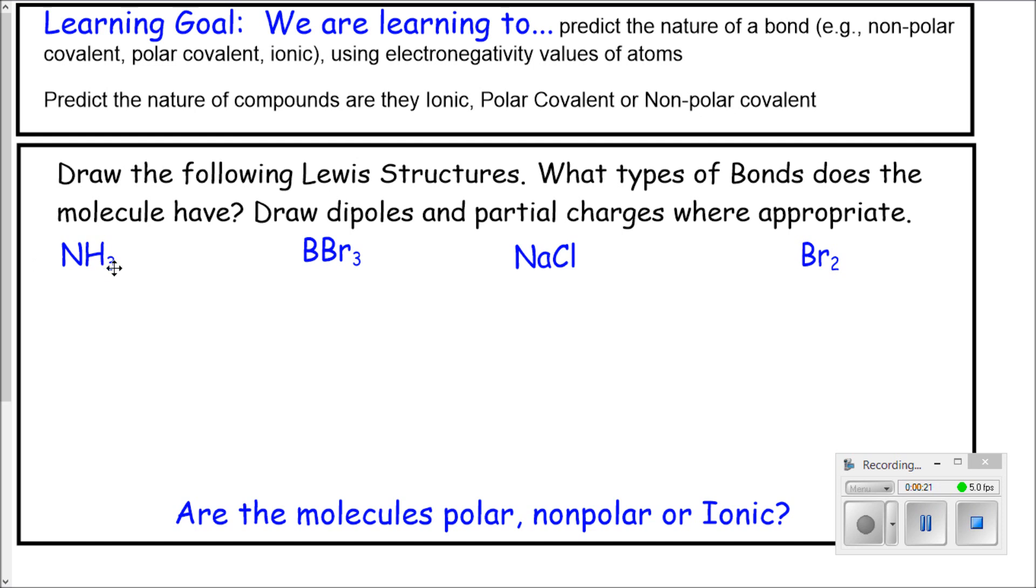What I'd like you to do to start is to draw the following Lewis structures of the compounds in blue: NH3, BBr3, NaCl, and Br2. Draw dipoles and partial charges where appropriate. Please pause the video and do that now.